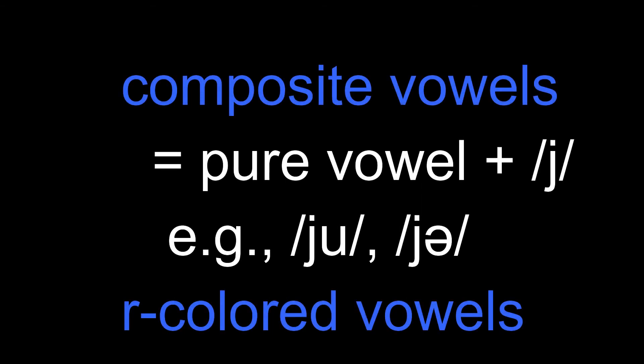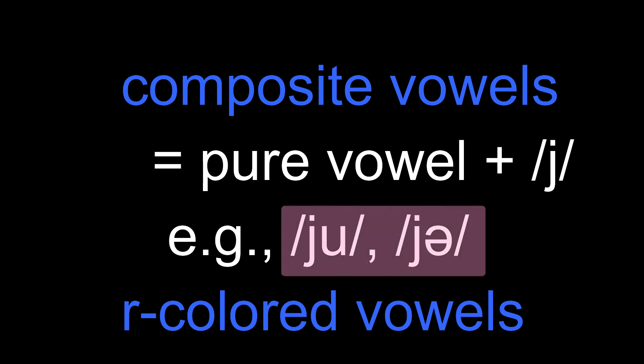Composite vowels are produced when E sound is added to the pure vowel sound. Examples of composite vowels are U and E.